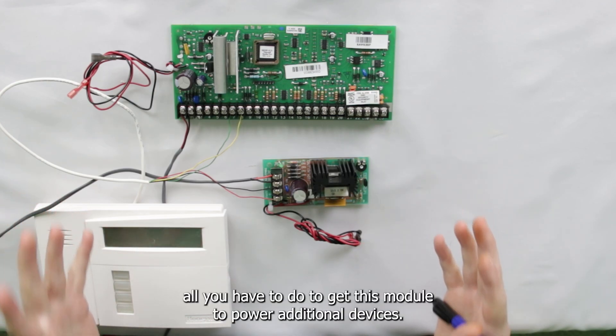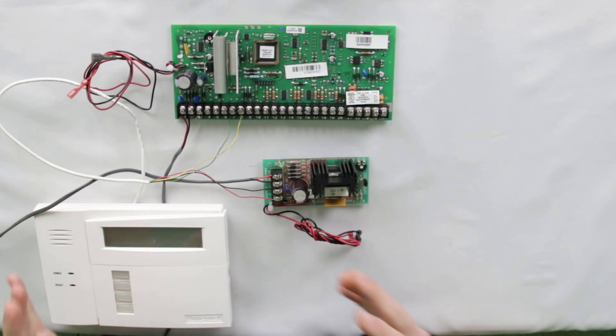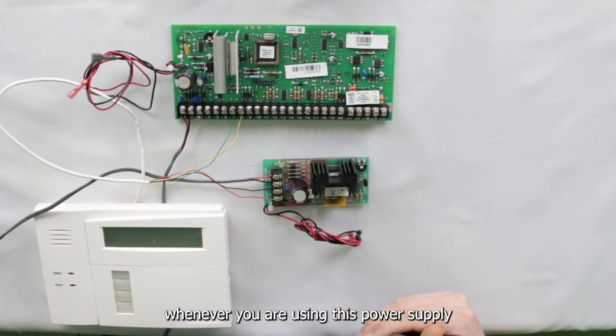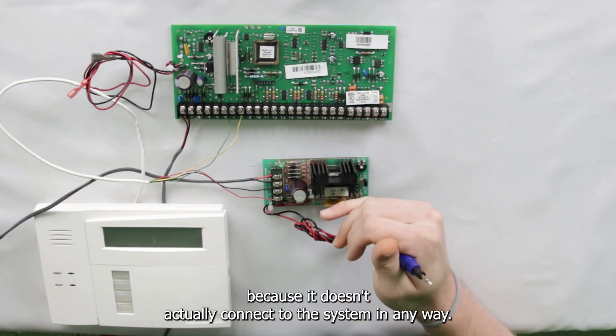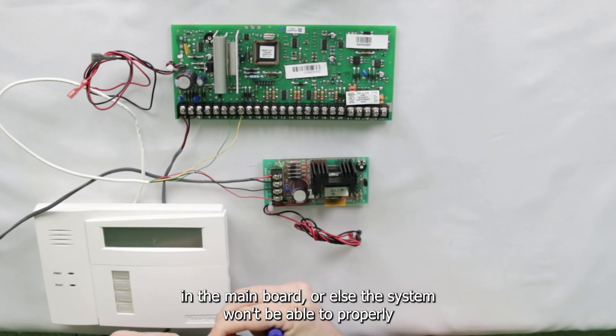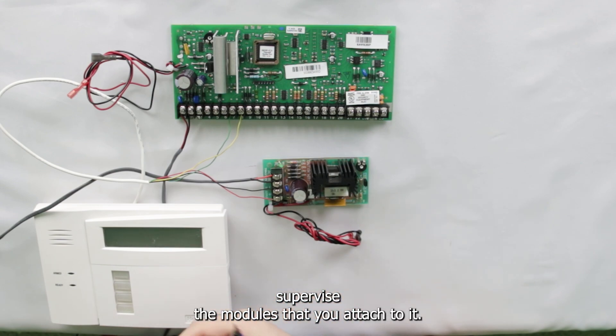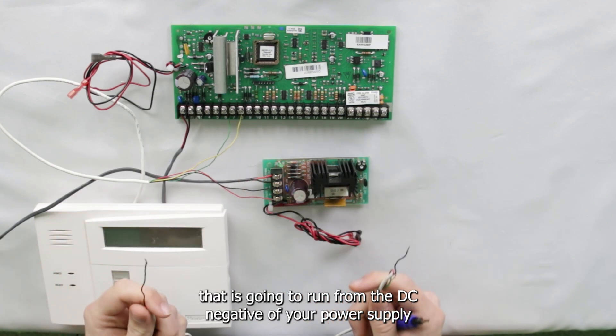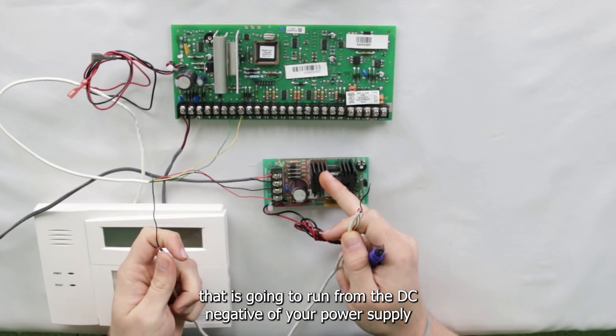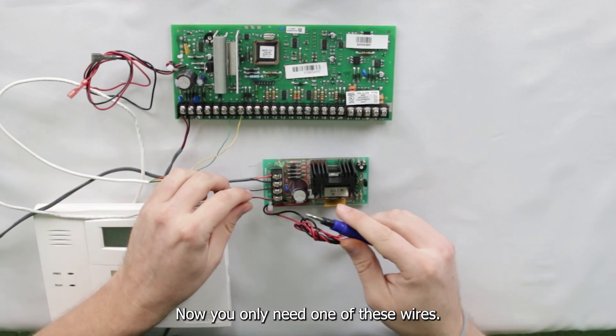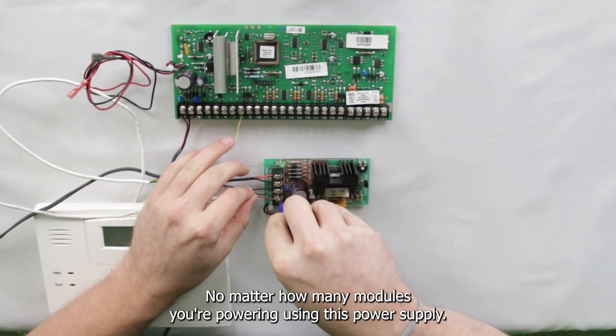And that's literally all you have to do to get this module to power additional devices. However, there is one additional wire that you have to use. Whenever you're using this power supply, because it doesn't actually connect to the system in any way, you have to connect the grounds between the power supply and the main board, or else the system won't be able to properly supervise the modules that you attach to it. So essentially, you need one wire that is going to run from the DC negative of your power supply up to the number four terminal on your main board. Now you only need one of these wires no matter how many modules you're powering using this power supply.